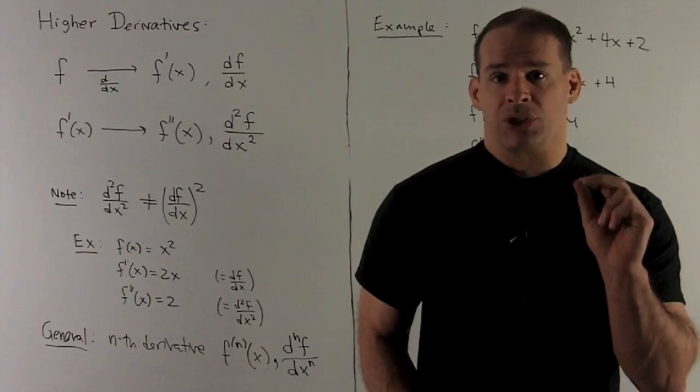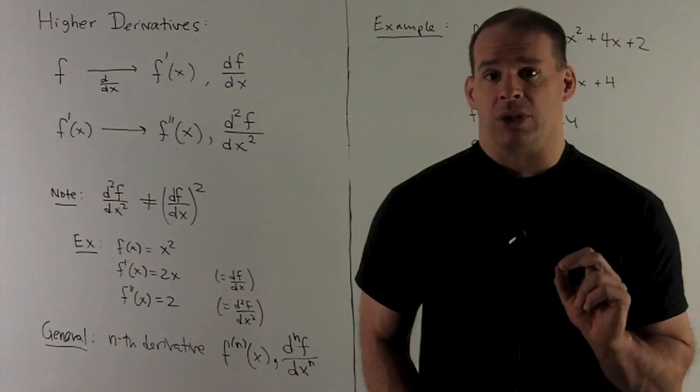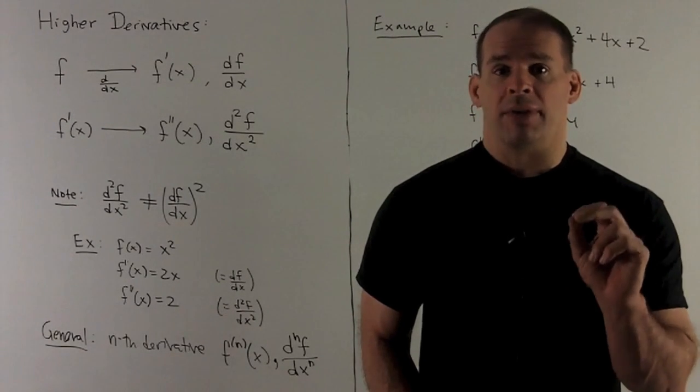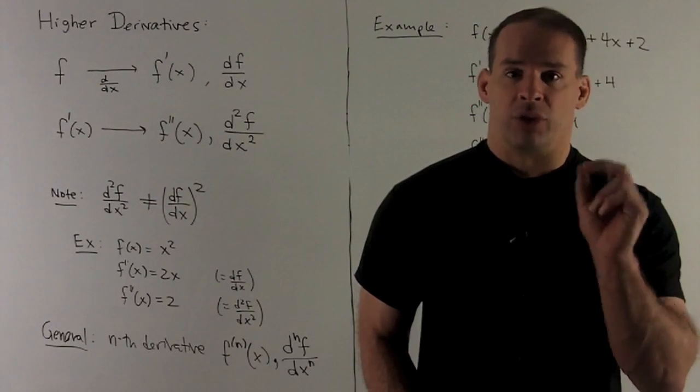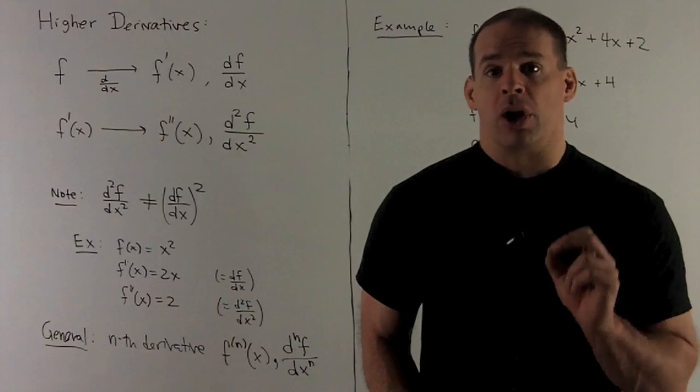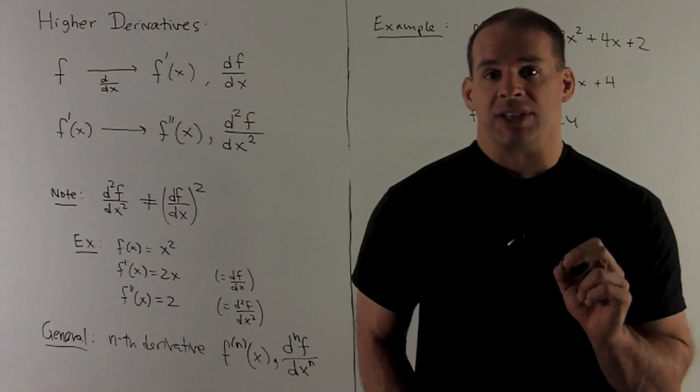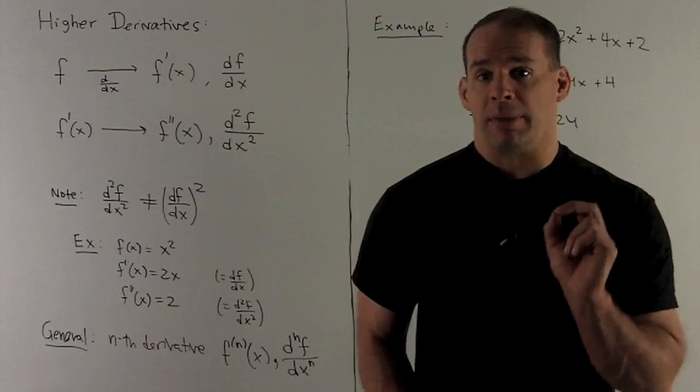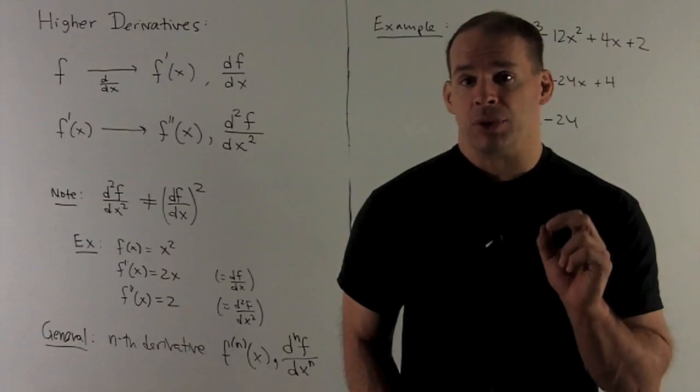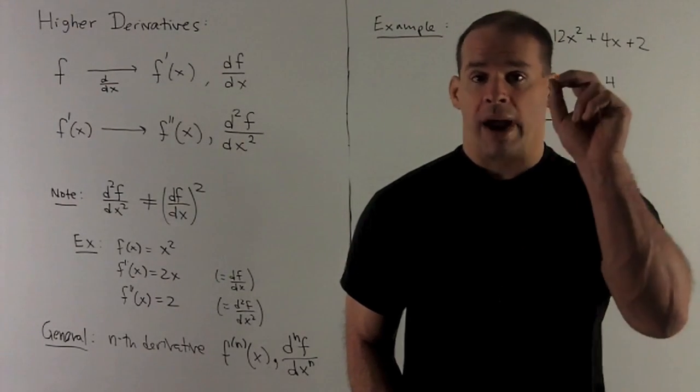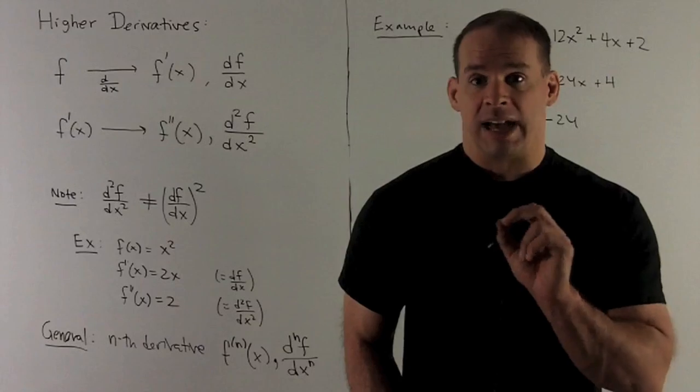We want to make sure we know what the notation looks like. So if I take f prime, take the derivative of that, that's what we're going to call the second derivative of f. We'll write that as either f double prime of x or in Leibniz notation, d squared of f over dx squared.